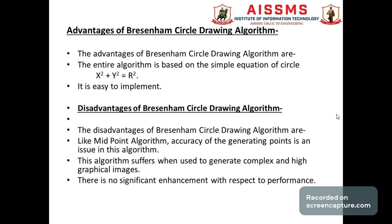The advantages of Bresenham's circle drawing algorithm are: the entire algorithm is based on the simple equation x² + y² = r², and it is easy to implement. The disadvantages are: like the midpoint algorithm, the accuracy of generating points is an issue; the algorithm has limitations when generating complex and high graphical images, as it becomes more complicated; and there is no significant enhancement with respect to performance.